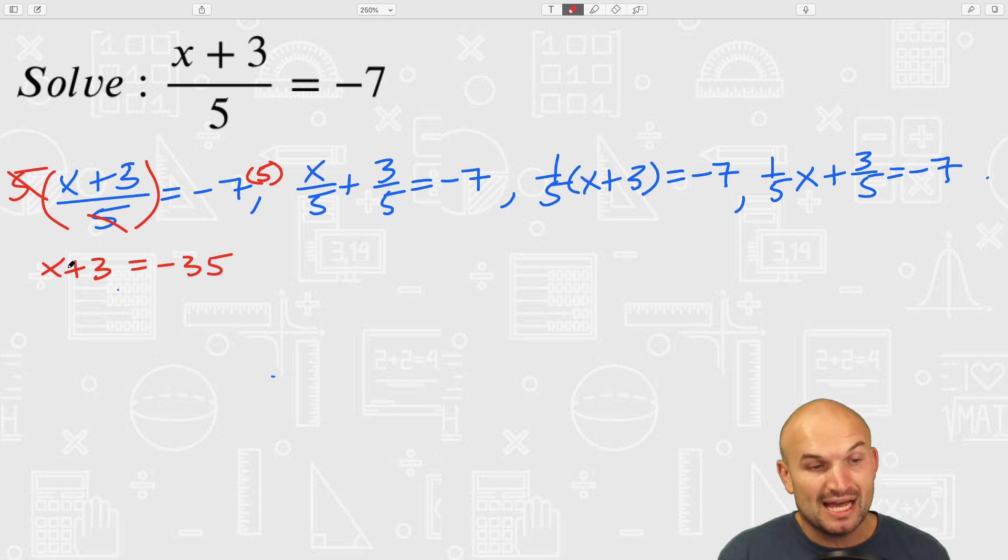Now I can see that my variable x is just being added by 3, so I'll go ahead and subtract 3 and I get x equals negative 38.